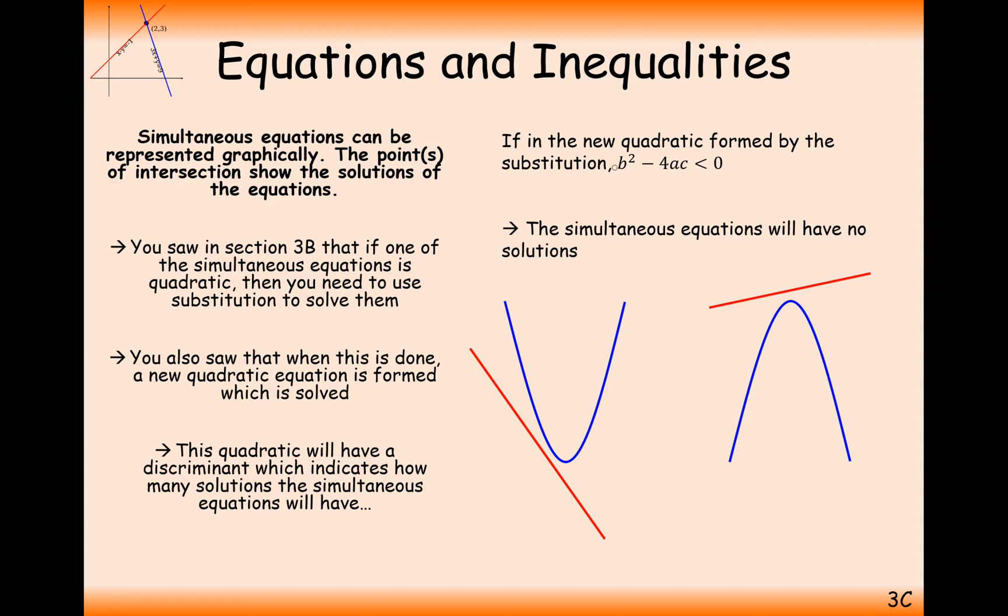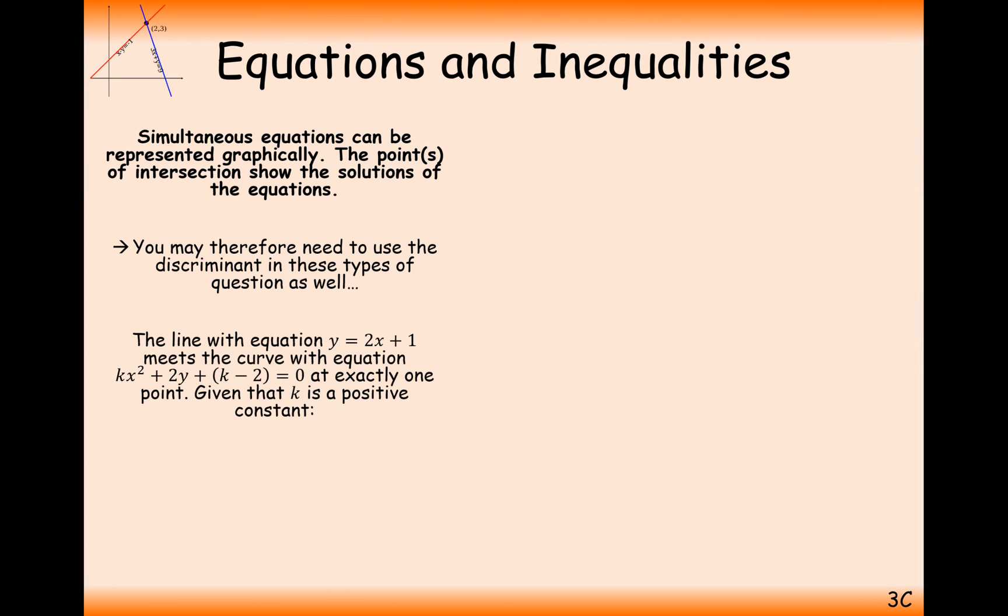Okay, in order to create this b squared minus 4ac, you need to set the two equations equal to each other or substitute one into the other. In this case here, we're going to go through an example where we have y equals 2x plus 1 as our straight line graph and a more tricky quadratic graph. kx squared plus 2y plus k minus 2 equals zero. And we're told here it has exactly one touching point. And we need to find the value of k.